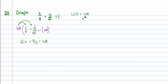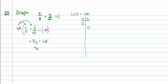Even when asked to solve for y, it's a good habit to find the intercepts first. To find the intercepts, let x equal 0 and find y, then let y equal 0 and find x. If x is 0, we have 8y is equal to 168. Dividing both sides by 8, y is 21. If y is 0, we have 21x is equal to 168. Dividing both sides by 21, x is equal to 8.